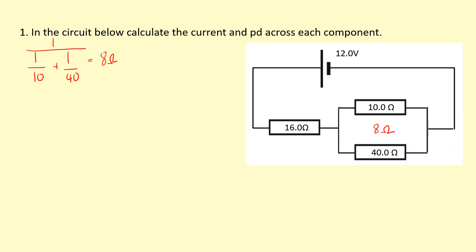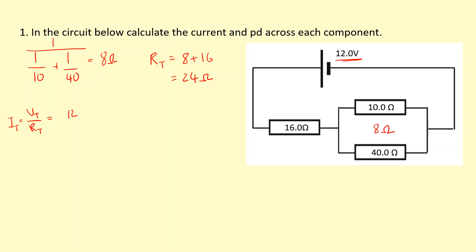Now I can see that because that combination is in series with this resistor here, the total resistance of this circuit is going to be adding up the 8 and the 16, giving a total of 24 ohms. I also have the total voltage, which means I can work out the total current in the circuit. So if I take the total voltage divided by the total resistance — 12 over 24 — that gives me a total current of 0.5 amps flowing through the circuit.